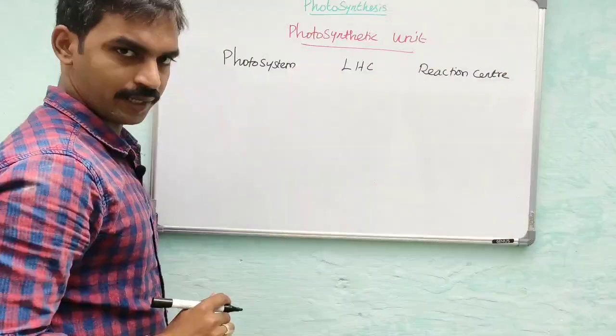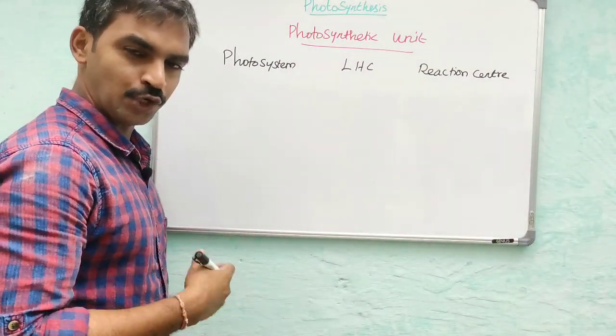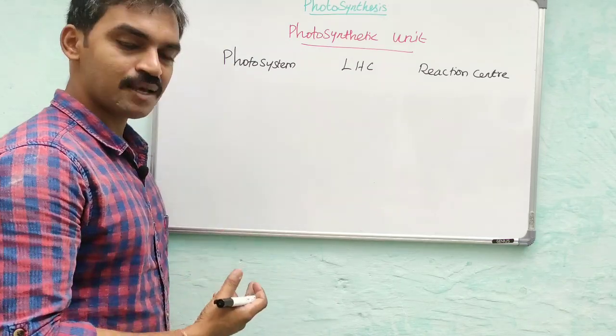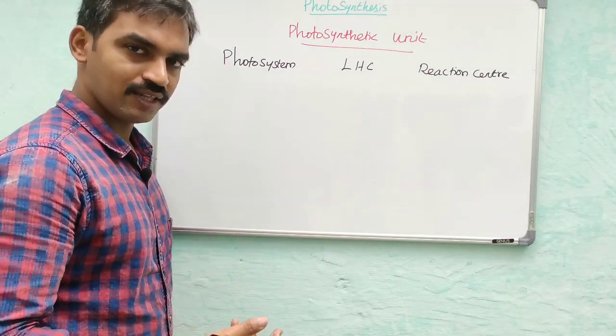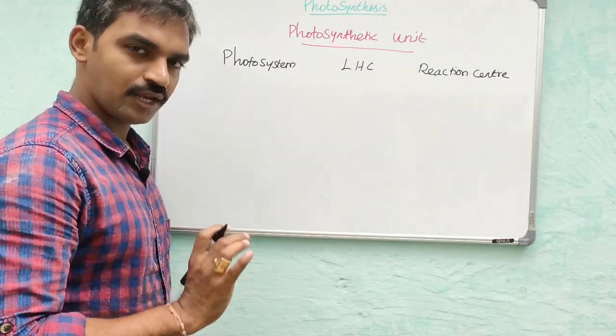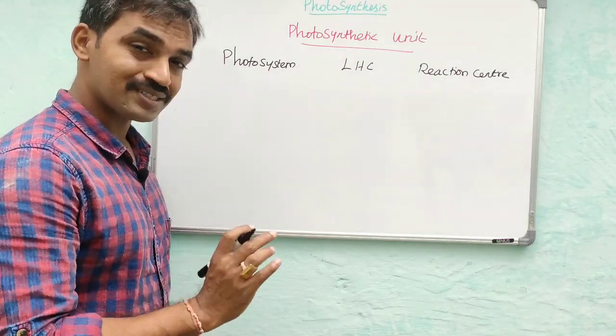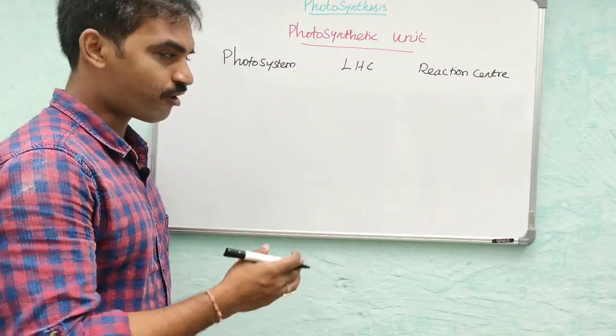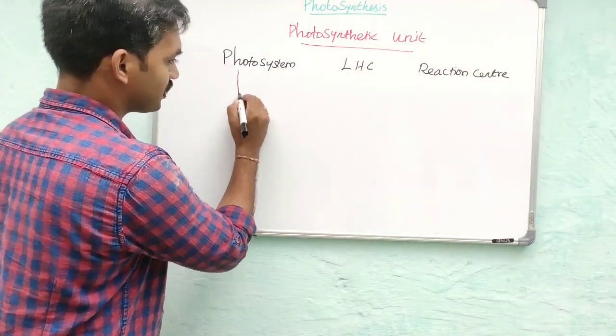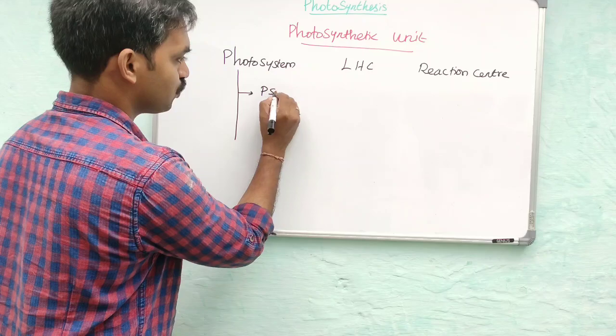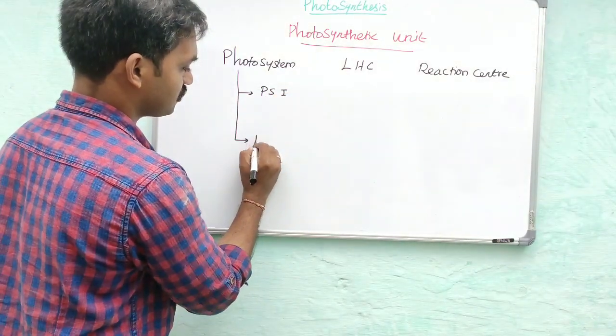A photosystem is a group of pigments present in the thylakoid or granum, which is a stack of thylakoids. Photosynthetic pigments are present in groups called photosystems. There are two types: PS1 and PS2.